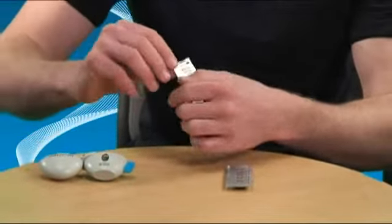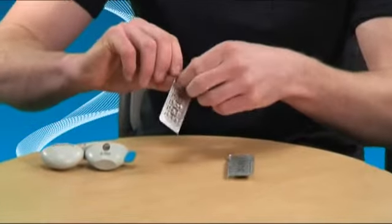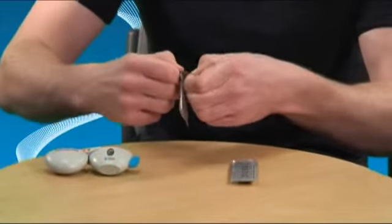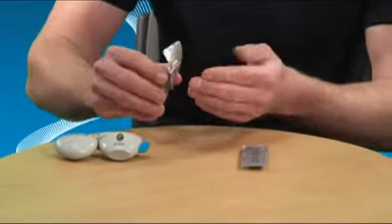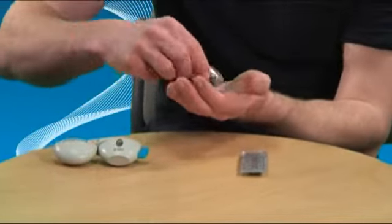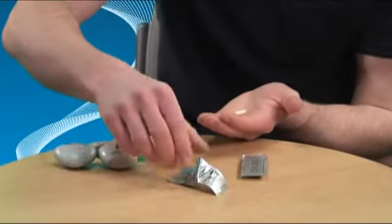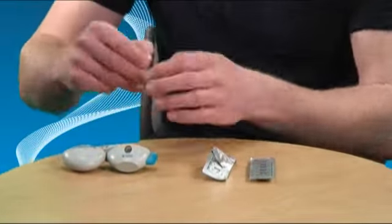Peel back the foil, exposing one capsule, and then remove it. Only open the blister immediately before you are going to use the capsule. Place the capsule in the chamber in the middle of the Handihaler.